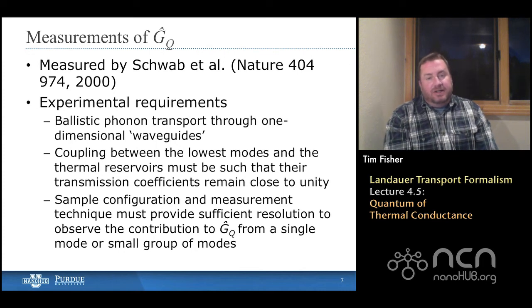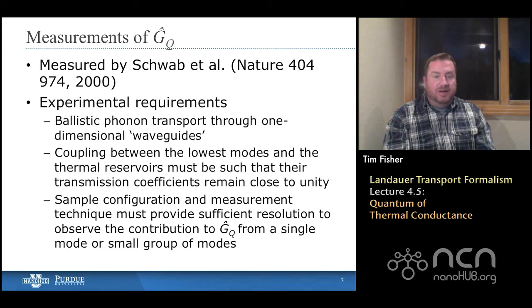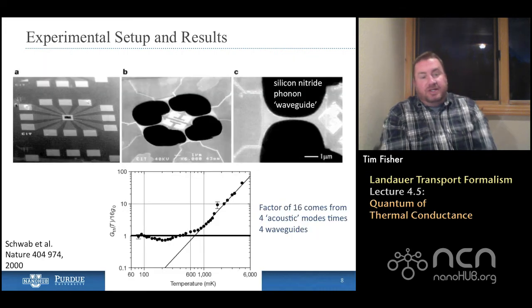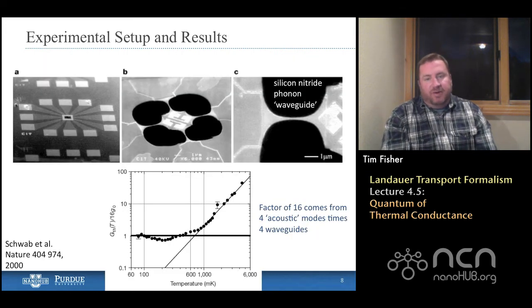Well, it turns out in some seminal work that's listed here that the quantum of thermal conductance has been measured and it was a very intricate measurement. They had to make a number of different one-dimensional conductors or wave guides. They had to make sure that the coupling was very good between the devices and the thermal reservoir so that there was ideal transmission. So the transmission functions were very close to unity. And also they had to configure the sample so that they had enough resolution, experimental resolution, to actually measure what is a tiny amount of heat flow.